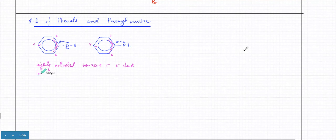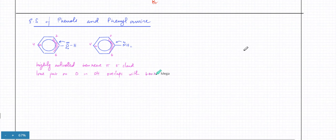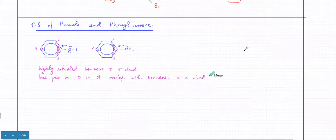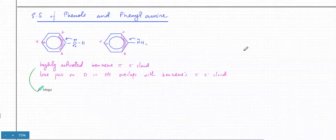They're going to ask you about this, so what you're going to write is that the lone pair on oxygen in OH overlaps with the benzene pi electron cloud — remember to use the correct wording. This increases the electron density, and these are highly activated, which means the reactions are going to be considerably faster compared to normal benzenes and arenes.